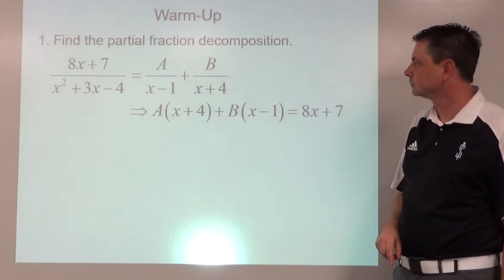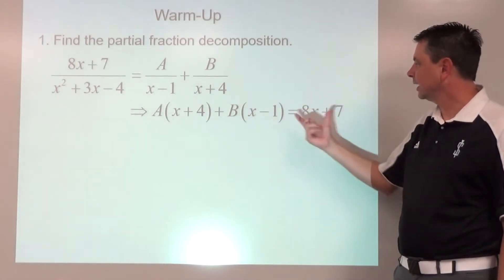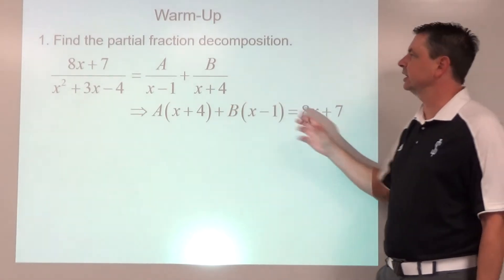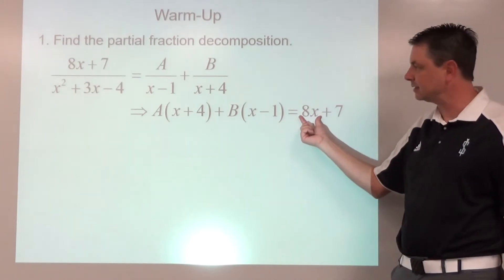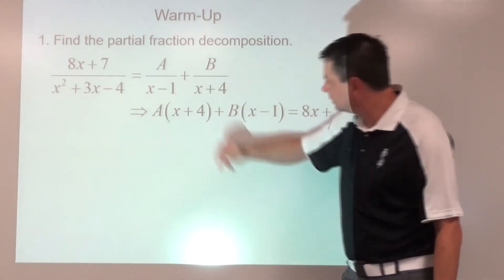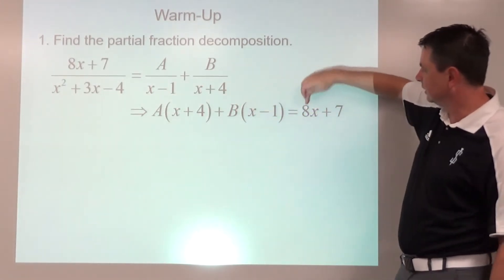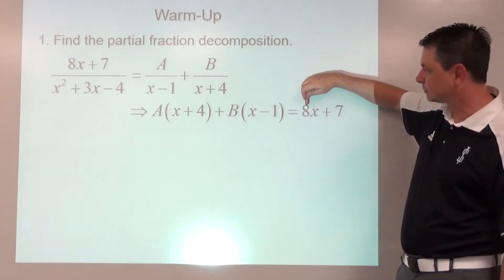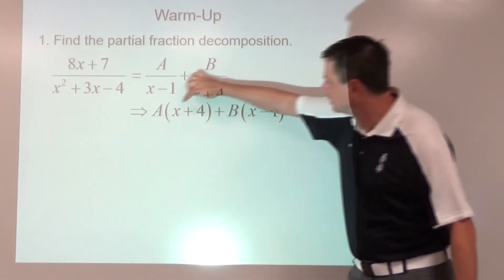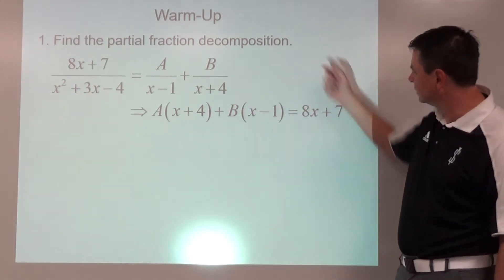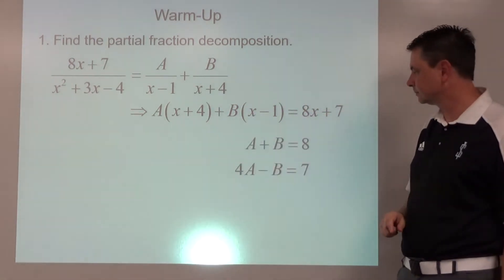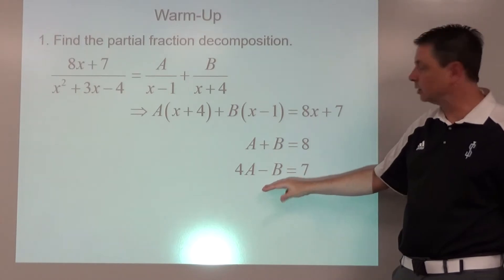And that numerator is going to equal that numerator, so we set up the system. We've got x's, so a plus b equals 8, and then our constant 4a minus b is equal to 7. Solve the system. It's ready to add right now.